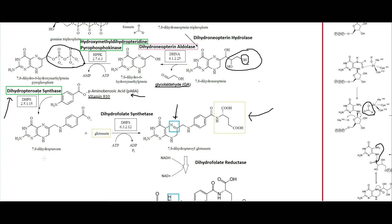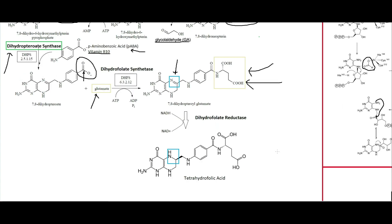From there we end up with 7,8-dihydropteroate. Then we just add glutamate — circled in gold — onto the carboxylic acid via a primary amine attack on that carbon. Then dihydrofolate reductase performs the reduction, removing the double bond and giving us the single bond, and we end up with tetrahydrofolic acid.